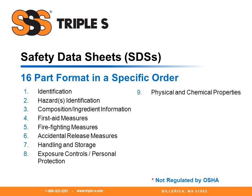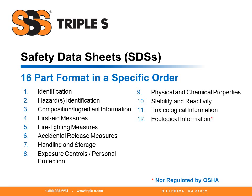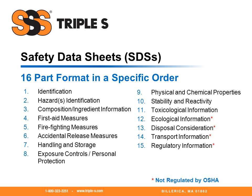Part eight, exposure controls or personal protection. Part nine, physical and chemical properties. Part ten, stability and reactivity. Part eleven, toxicological information. Part twelve, ecological information. Part thirteen, disposal considerations. Part fourteen, transportation information. Part fifteen, regulatory information. And part sixteen, other information including date of preparation and of last revision. Please note that parts 12 through 15 are not regulated by OSHA, but are part of the global harmonized system.